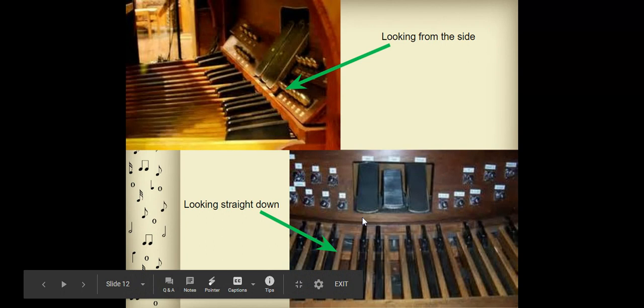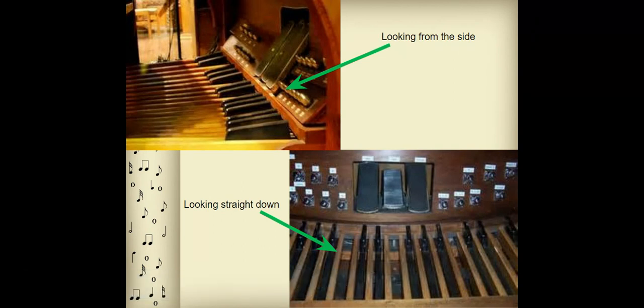And a swell pedal. And so what this does, and you'll see this on the organ at St. John's, there's what's called a swell chamber, and the swell pipes are enclosed in a box. And you can open the slats on the box to make it louder, and then close the slats on the box to make it sound softer.